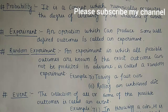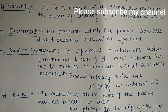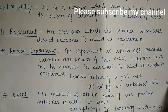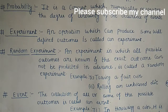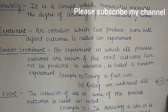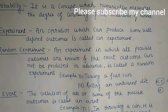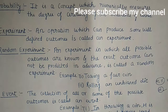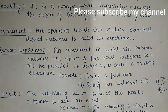Now move to another definition: event. The collection of all or some of the possible outcomes is called an event. When we perform an experiment, we get some outcomes. If we consider all the outcomes or some outcomes, we call that an event. For example, in tossing a coin, H is the event of getting a head.